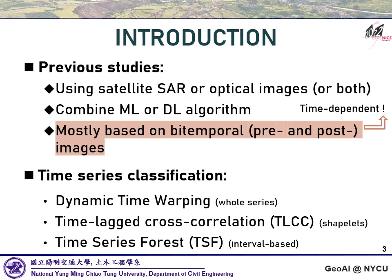Currently, large area landslide detection is mainly based on remote sensing data — for example, SAR and optical images. Most methods use bitemporal images, which means they employ pre- and post-event data as the basis for detection. The limitation of using bitemporal images is that they are highly time-dependent, requiring well-timed data at a specific time. Besides, if the landslide area becomes bare soil and then recovers to vegetation within the selected interval, a landslide may not be detected. At this point, time series can help. Landslide detection using chronological observation — regarded as binary classification of time series — can overcome these problems.